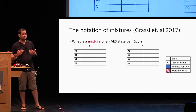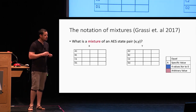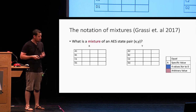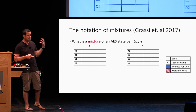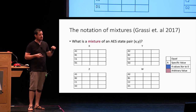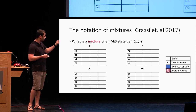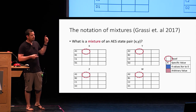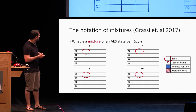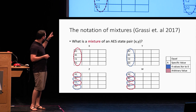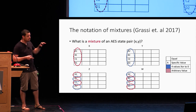I'll explain the notation introduced by Grassi et al. that we need to understand our attack. We define the mixture of two AES states X and Y: we create a mixture Z and W where each byte in Z is either taken from X or from Y, and W takes the other byte. In our notation, a blank box means all four bytes in that specific matrix position are equal, and if a specific value is written, all bytes with that value are equal. We take the first column and mix it between Z and W, and we can do this for each column separately — there are seven possible mixtures per column.